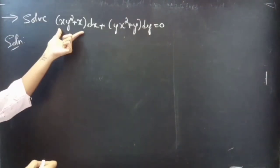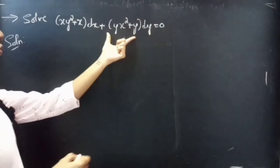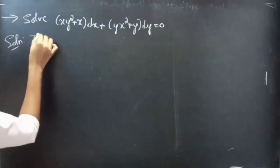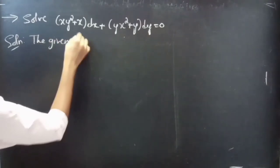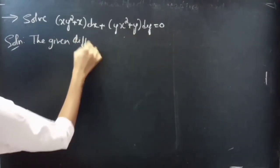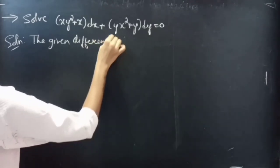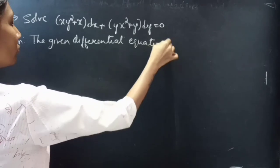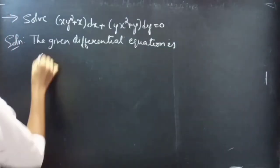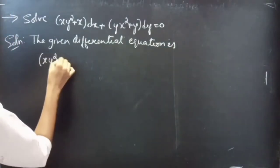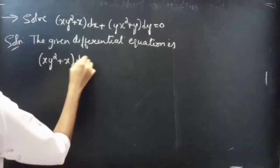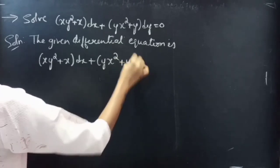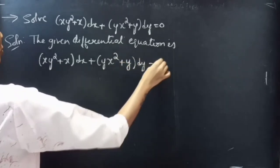Solve: x(y² + x)dx + y(x² + y)dy = 0. We have the given differential equation: x(y² + x)dx + y(x² + y)dy = 0.